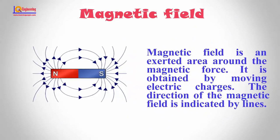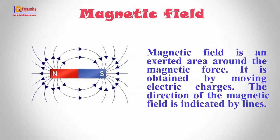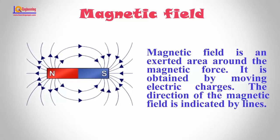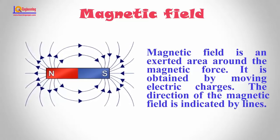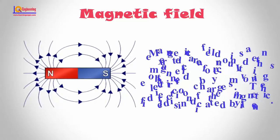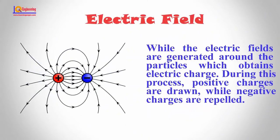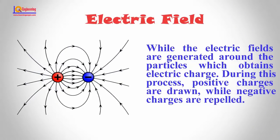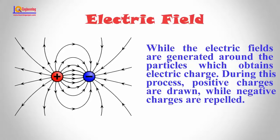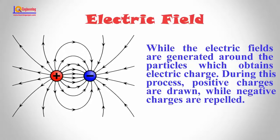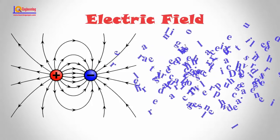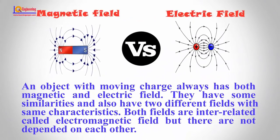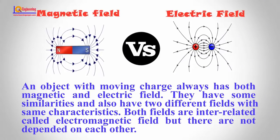A magnetic field is an exerted area around the magnetic force. It is obtained by moving electric charges, and the direction of the magnetic field is indicated by lines. Electric fields are generated around particles which obtain electric charge. During this process, positive charges are drawn while negative charges are repelled. An object with moving charge always has both a magnetic field and an electric field.